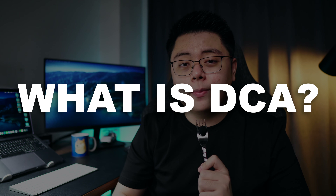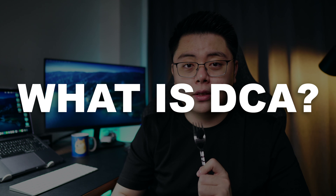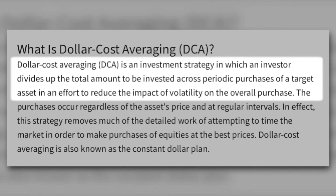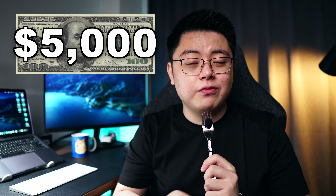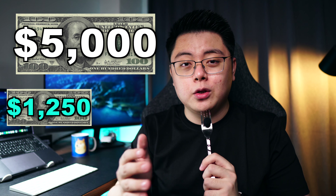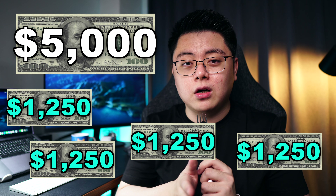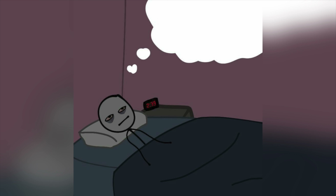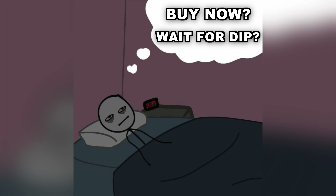First and foremost, let's talk about what dollar cost averaging is. By definition, dollar cost averaging, or DCA, is an investment strategy in which an investor divides up the total amount to be invested across periodic purchases of a target asset in an effort to reduce the impact of volatility on the overall purchase. For example, if you have $5,000 right now, you can split them out into three or four purchases over the course of say three months. But then you will always have this doubt — should you buy now or should you wait for the dip?